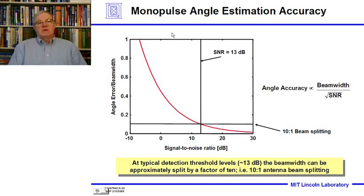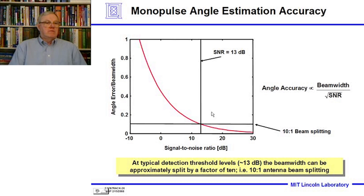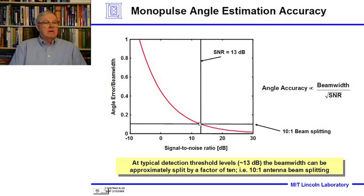How accurately can you make estimates with monopulse angle techniques? The accuracy is the beam width divided by the square root of the signal-to-noise ratio. For a typical signal-to-noise ratio of 13 dB — a good detection threshold — that allows us to achieve 10-to-1 beam splitting, meaning the beam width can be split by a factor of 10.